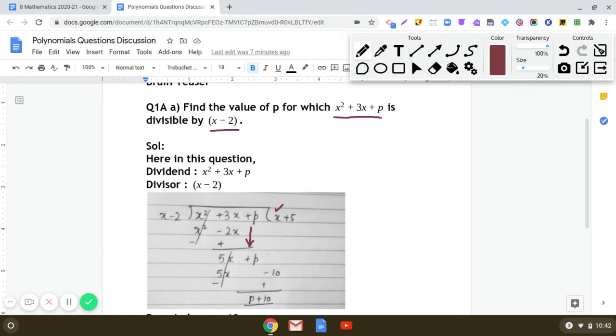So we will continue the process of division and the next term in the quotient will be plus 5. When we multiply x - 2 by 5, we get 5x - 10. So do the subtraction. 5x minus 5x gets cancelled and p + 10 is the remainder.